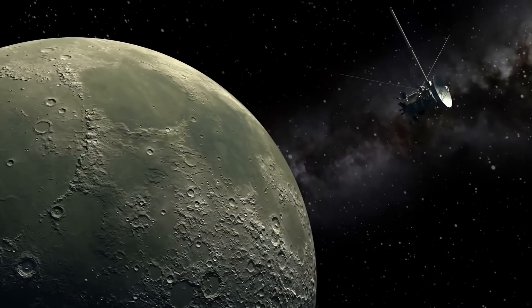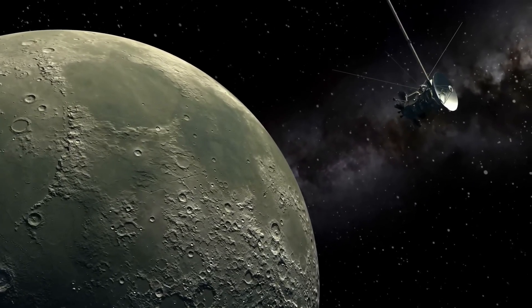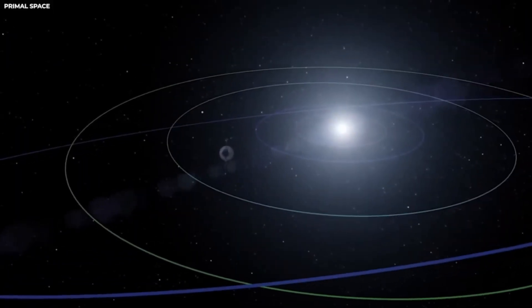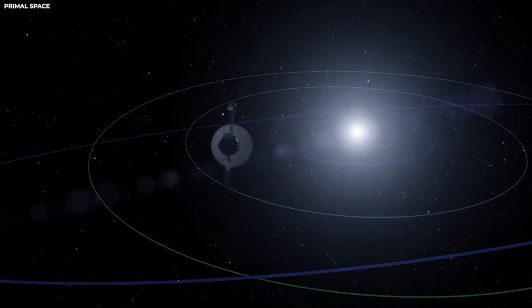Some called it interference, others whispered a stranger possibility: Voyager had touched a gravitational shell around the solar system, organized, deliberate, containing something beyond human understanding.